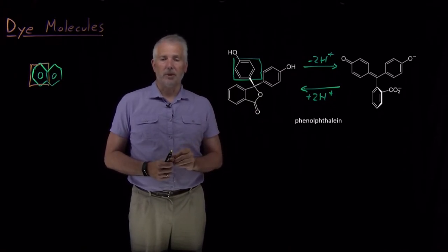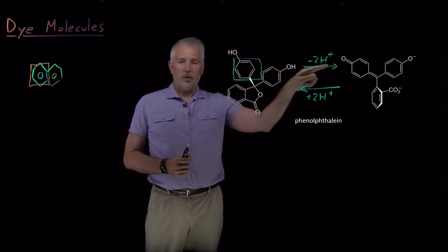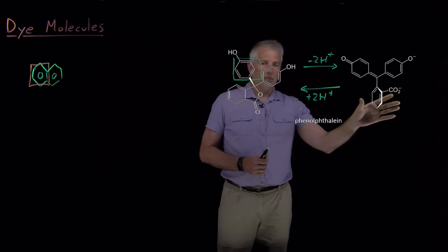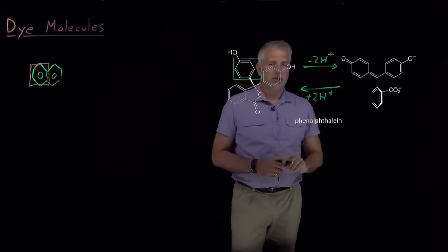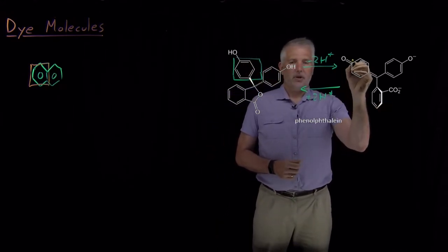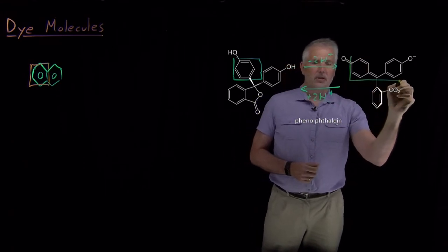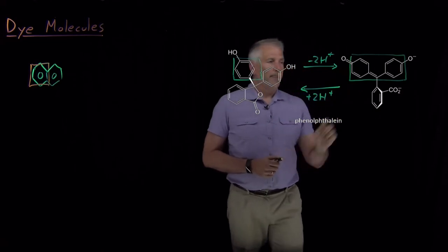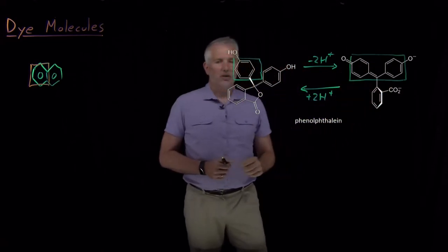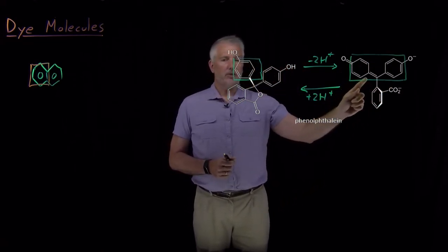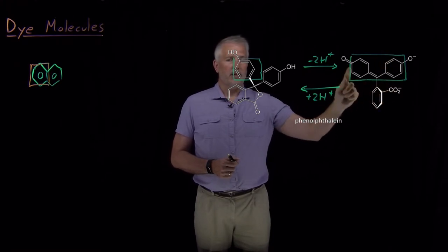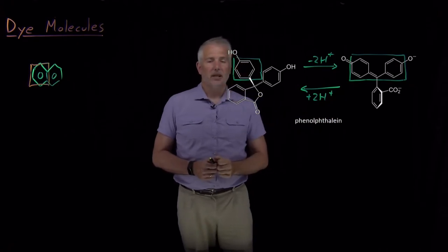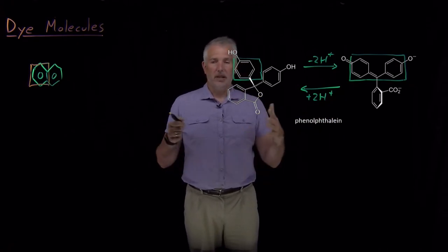On the other hand, when you titrate with hydroxide, when you consume some of these protons and generate the more basic form of this molecule, if I draw a box around this portion of the molecule, this portion is now all conjugated with alternating double single double single double bonds and it's planar. The two-dimensional box in which these pi conjugated electrons are confined is larger than it used to be.